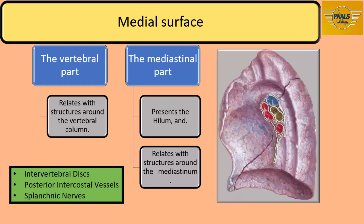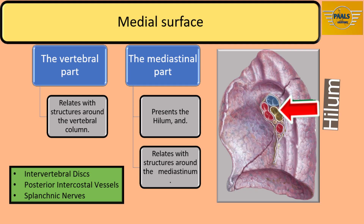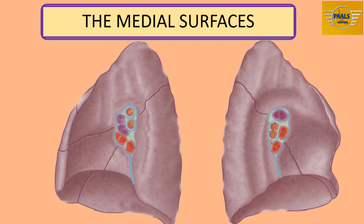The medial surface is the part that lies against the mediastinum anteriorly and the vertebral column posteriorly. The vertebral part of this surface relates with structures around the vertebral column, including the intervertebral discs, the posterior intercostal vessels, and the splanchnic nerves. The mediastinal part presents the hilum and relates with structures around the mediastinum, which we shall consider in more detail.